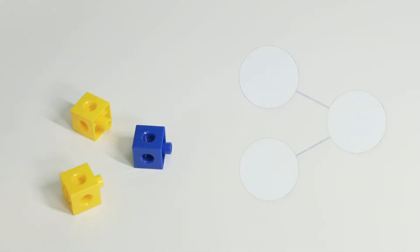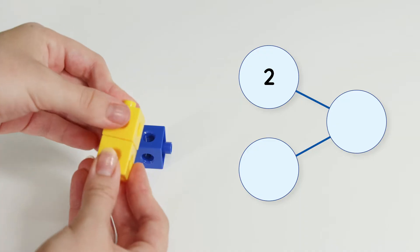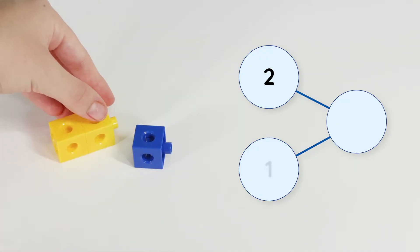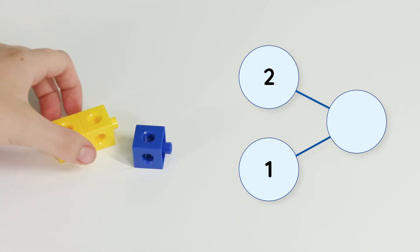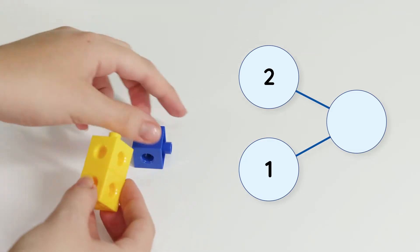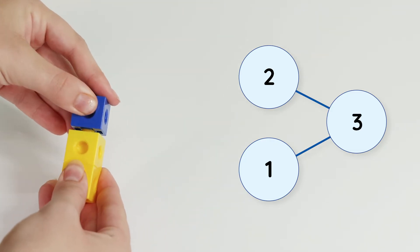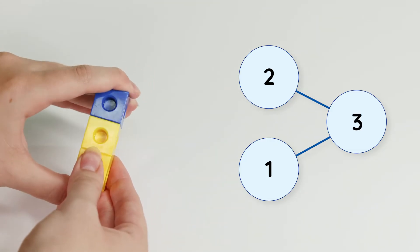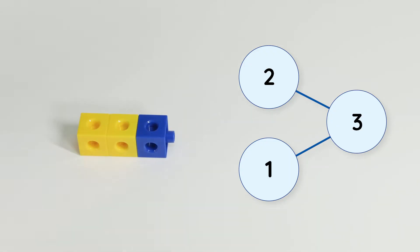Let's make number bonds. We have two yellow cubes and one blue cube. Two and one make three. There are three cubes in all.